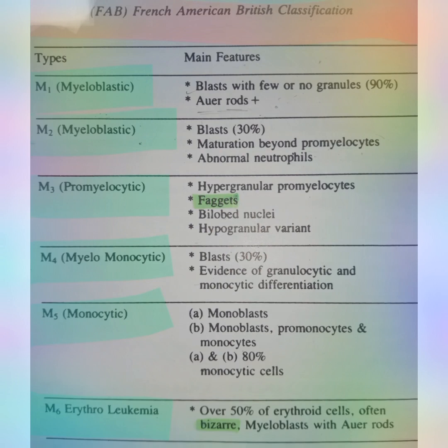Type 5 is monocytic. This is only based on the monoblast, which is the immature form of the monocyte. Non-granulocytes have two types - lymphocytes and monocytes - and this type is only based on the monocytes. You will see monoblasts, promonocytes, and monocytes, with 80 percent monocyte cells.